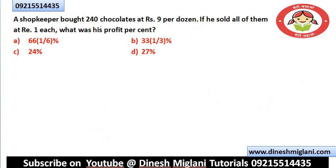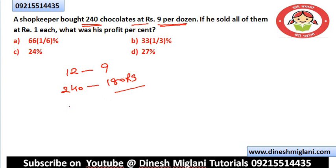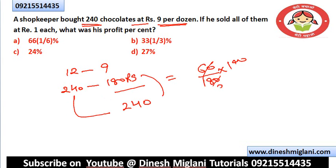Question 12: A shopkeeper bought 240 chocolates at a rate of 9 per dozen. So 12 chocolates cost Rs. 9, meaning 240 chocolates cost Rs. 180. He sold all of them at Rs. 1 each, so selling price = Rs. 240. Profit = 240 − 180 = Rs. 60. Profit percent = 60/180 × 100 = 100/3 = 33⅓%. Hence B is the answer.